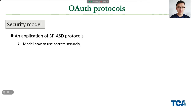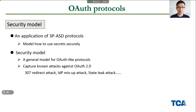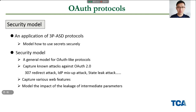OAuth can be seen as an application of the 3PSD protocols, which models how to use the secret securely. The security model is not tailored for OAuth 2.0, but is a general one for OAuth-like authorization protocols. We also show the model can capture the latest attacks against OAuth 2.0, which confirms the soundness of the model. Similarly to the model for 3PSD protocols, the model for OAuth can also capture various web features and model the impact of the leakage of intermediate parameters.